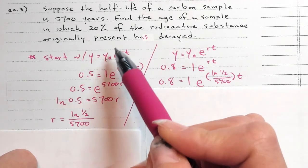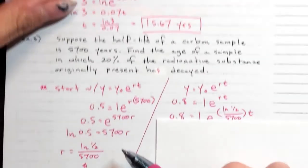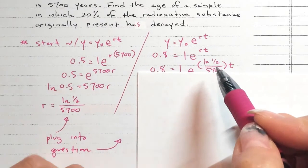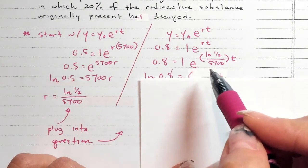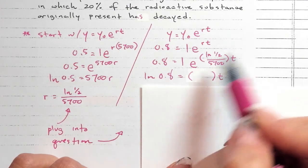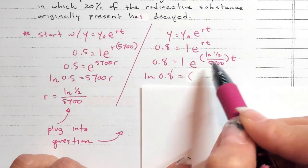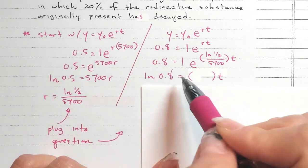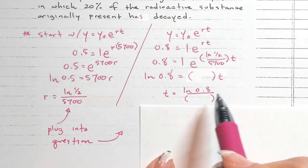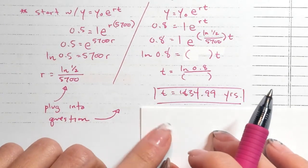Now plug that rate r = ln(1/2)/5700 back into the equation along with the given condition — 20% has decayed, so 80% remains: y = 0.8·y₀. Set up 0.8 = e^(rt), take the natural log of both sides, and since ln(e) = 1 you bring the power down. Divide by that fraction — or multiply by the reciprocal — and compute in your calculator to get the final answer for the age of the sample.